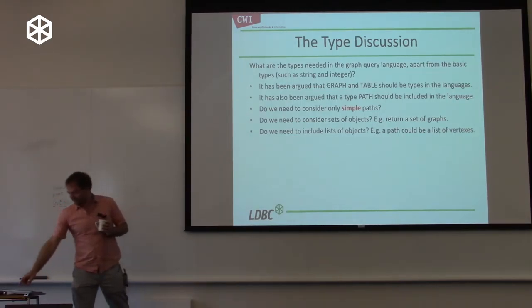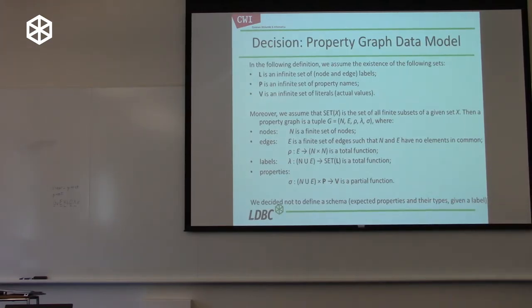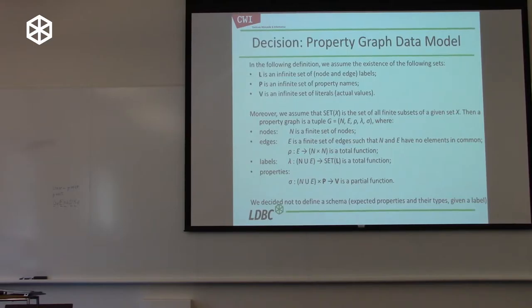Q: Is this property graph model the one that all different property graph databases support, or do some do something a little more or less? A: I think most support this, yes. Neo4j has this. There are some nuances — for instance, can a vertex have multiple properties with the same property key or not? I think in this definition we do not support that.